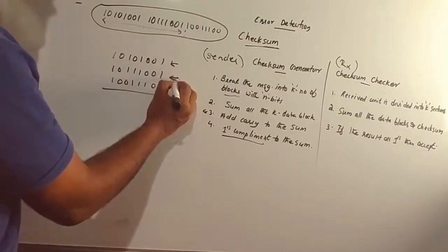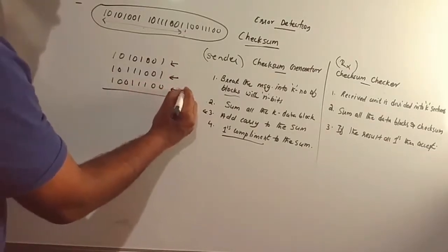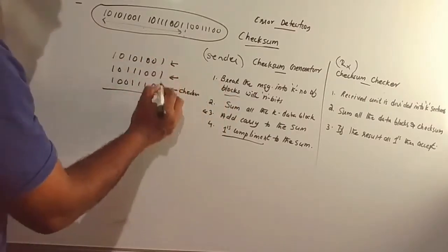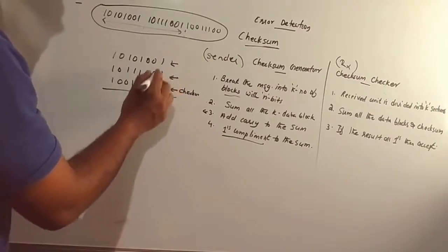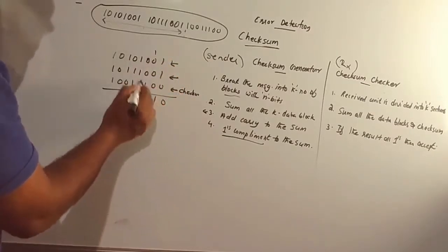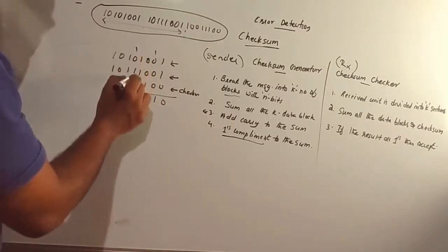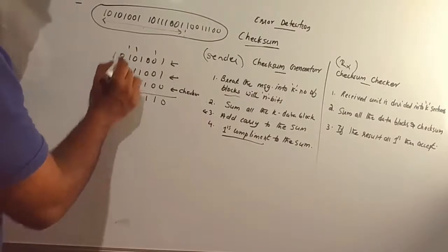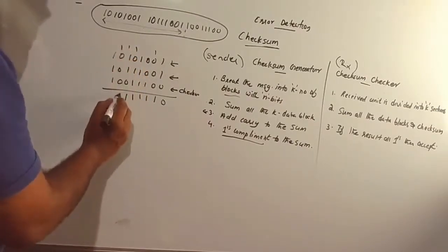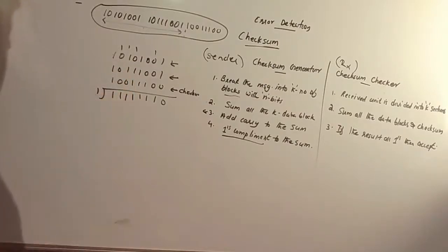The original message is divided into two blocks. We take the checksum as well. Adding the blocks: 1+1+0+0+0+1 and further bits sum up. We carry out the bit-by-bit addition through all positions.